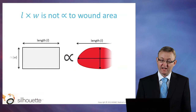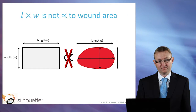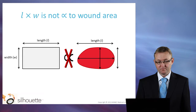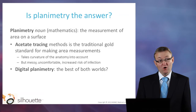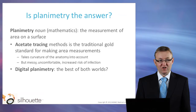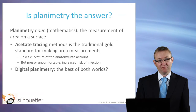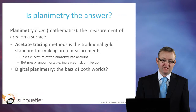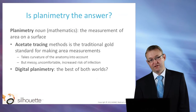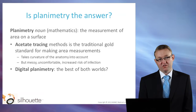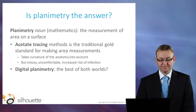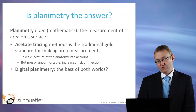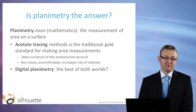So unfortunately, length times width is not proportional to wound area. What options are available to us? Well, planimetry is the measurement of area of a surface, and acetate tracing is the traditional gold standard for making area measurements. It has a number of advantages over a ruler — for a start, it does take into account some of the curvature of the surface, and it is directly measuring the area as opposed to deriving it from length and width. There are some drawbacks: it can be messy, uncomfortable for the patient, and it is a risk of infection. Also, it is not so repeatable at making measurements of areas of the body like the heel.